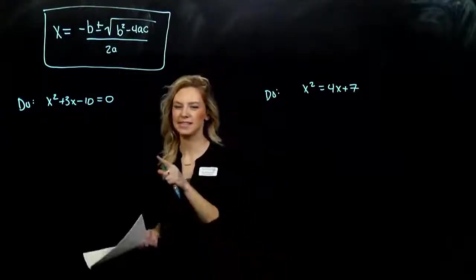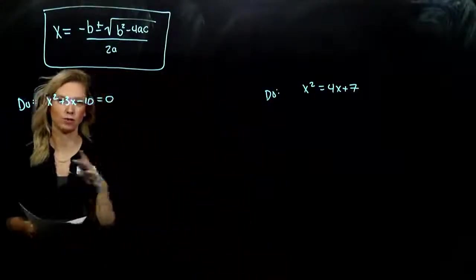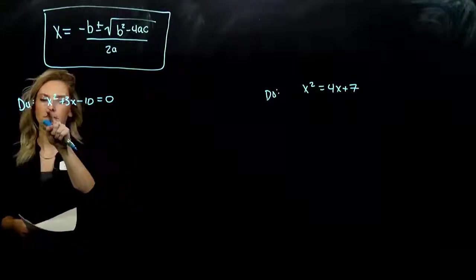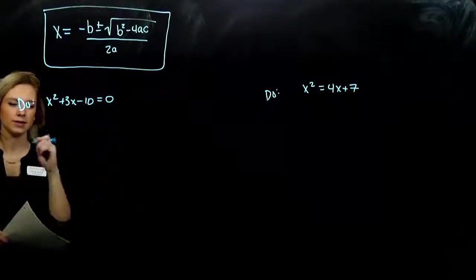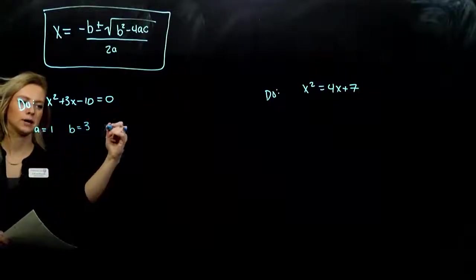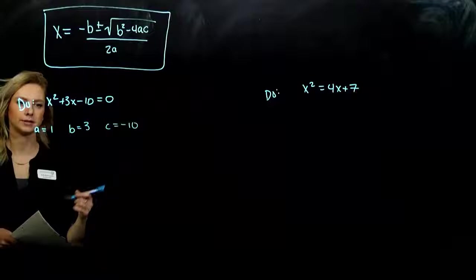Alright, let's get another one. So in this case, it's already in that general form for us. Everything on one side, set equal to zero, and my quadratic term is positive. So in this case, my a value is 1, b is 3, and c is negative 10.